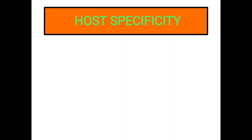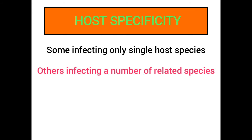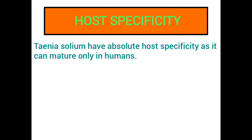Host specificity: Most parasites develop only in a restricted range of host species; that is, parasites exhibit varying degrees of host specificity — some infecting only a single host species, others infecting a number of related species, and a few being capable of infecting many host species. For example, the pork tapeworm Taenia solium apparently can mature only in humans, so adult Taenia solium have absolute host specificity.